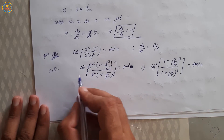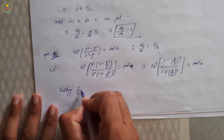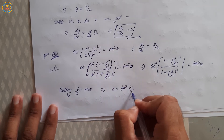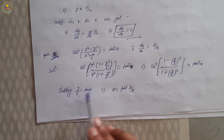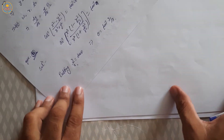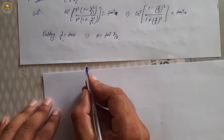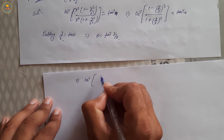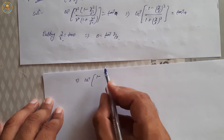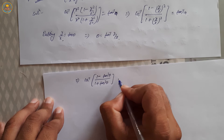Let y upon x equal to tan theta, so theta equals tan inverse (y/x). Substituting: (1 minus tan² theta) upon (1 plus tan² theta) equals tan inverse a. This gives cos 2 theta.